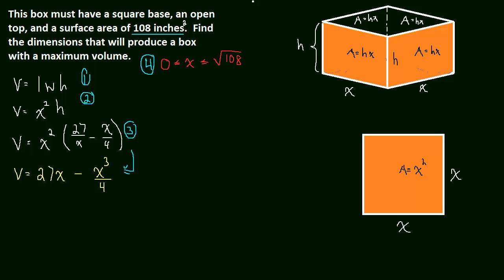So we have our volume function and now we want to take the derivative because, when the volume looks like this, the derivative tells us our critical numbers, which could be maximum and minimum points. So the derivative of the volume with respect to the variable x is going to be 27 - (3/4)x². Taking the derivative is the easy part. This is just a simple power rule.